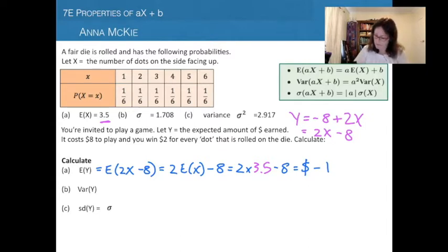Next part: the variance for this. Looking up here, the variance is Var(Y) = Var(2X - 8) = a²Var(X). Notice that the plus b has gone, because that doesn't affect the variance. That's your starting point, your y-intercept, which changes where the mean oscillates around but won't affect the variance. So we're multiplying 2² by the variance of X, which was 2.917, and that gives us 11.668.